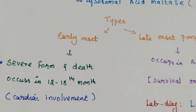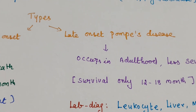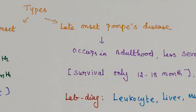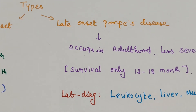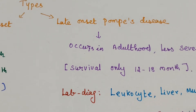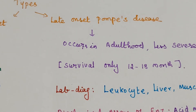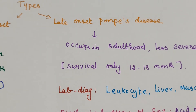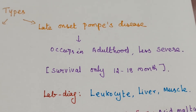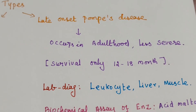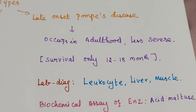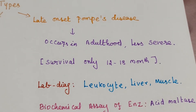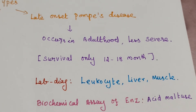The second type is late onset Pompe's disease. This one typically occurs in adulthood and is less severe. Survival may extend beyond 12 to 18 months, and patients may suffer from walking disability.